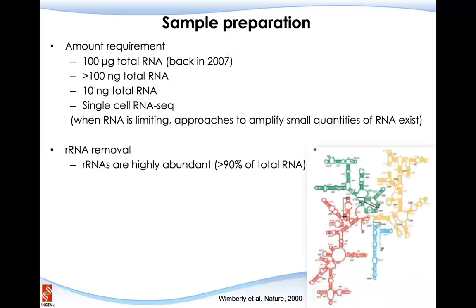The second consideration is ribosomal RNA removal. Ribosomal RNA is highly abundant in our systems and, depending on the species, cell type, or tissue, over 90% to 99% of total RNA is ribosomal RNA. Only the remaining part — the messenger RNA — is normally less than 1%. So if we sequence total RNA directly, over 99% of sequencing reads would go to the ribosomal RNA, which may not be of biological interest. Therefore, before RNA sequencing, we have to remove the ribosomal RNAs.